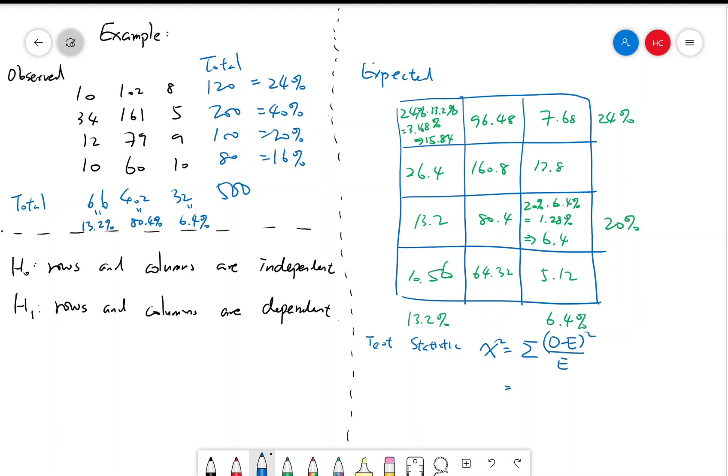So for example, the first term is 10 minus 15.84 squared over 15.84. And there's going to be 12 terms. The last term is going to be 10 minus 5.12 squared over 5.12. And with calculator or anything, this is equal to 15.5844.